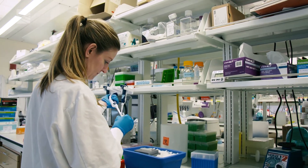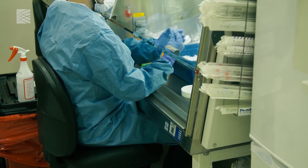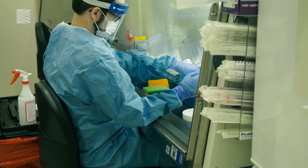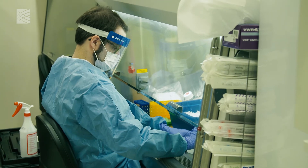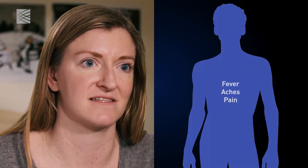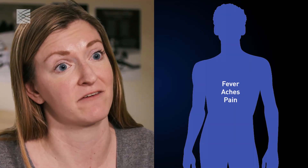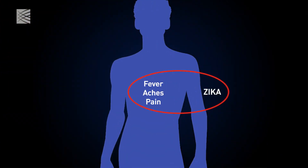One of the things that our lab was particularly interested in is whether we can expand upon this platform to detect multiple viruses. For example, Zika virus often manifests the same way that dengue virus does, and these viruses co-circulate in the same region. So it's very important to be able to say this patient has Zika versus dengue virus.